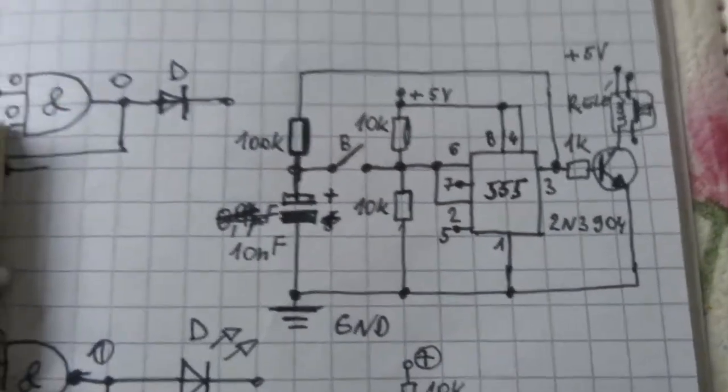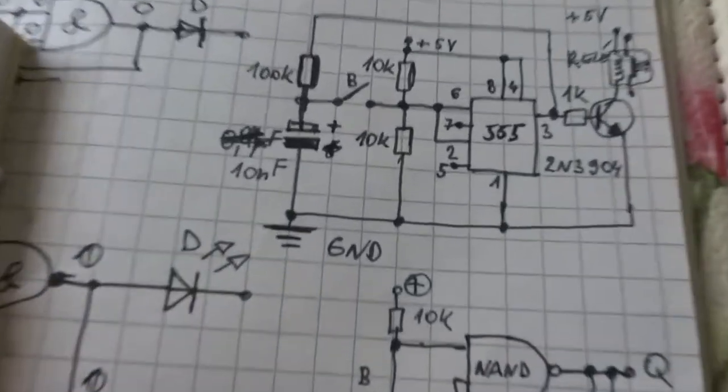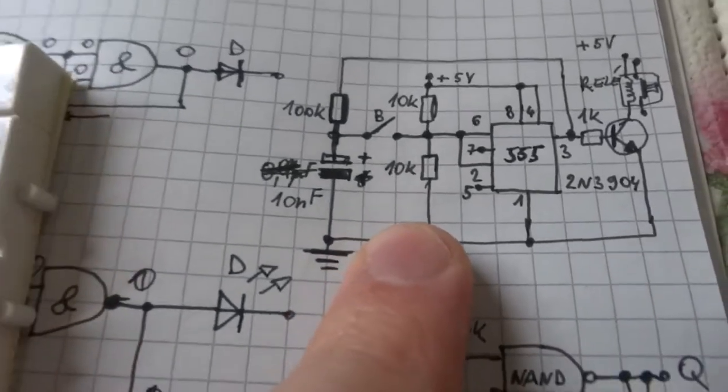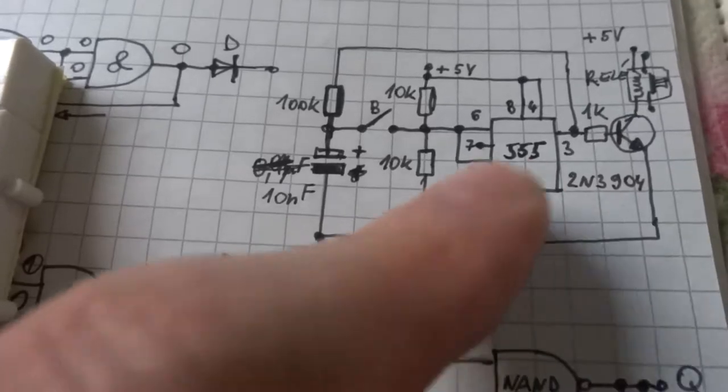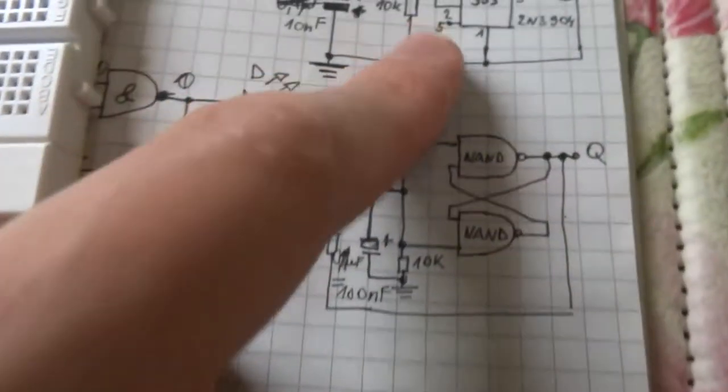Okay, today I want to present this momentary button convert into toggle switch with 555 circuit and this is almost the same with two NAND gates.